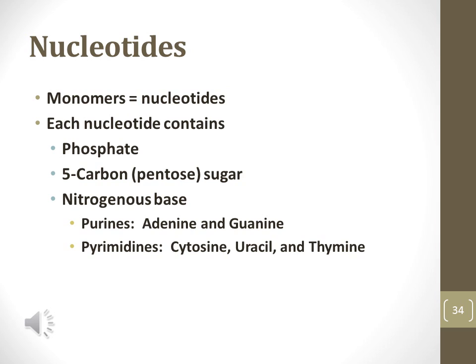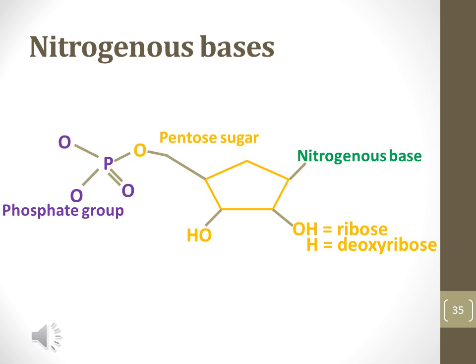Nucleotides are the basic building blocks of nucleic acids. Each nucleotide contains several components: a phosphate group, a five-carbon sugar known as pentose, and one of five nitrogenous bases. The purine bases are adenine and guanine. The pyrimidine bases are cytosine, uracil, and thymine. All pyrimidine bases contain a Y in the name, just as the word pyrimidine. This figure shows the phosphate group, the pentose or five-carbon sugar, and the nitrogenous base.